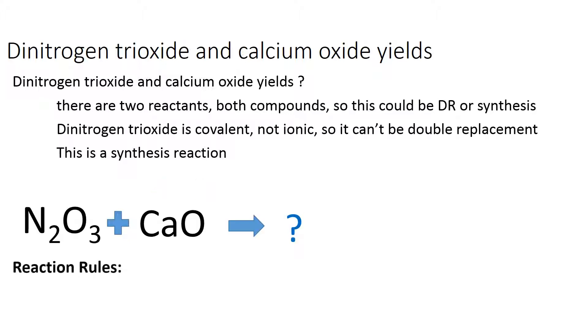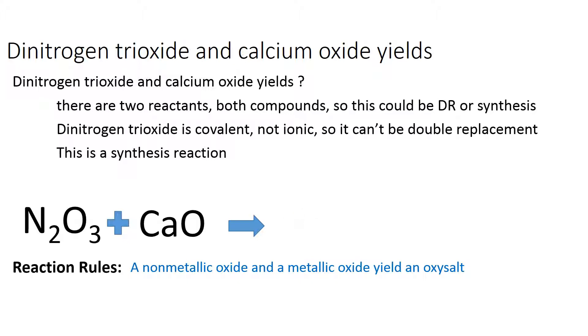So what does this yield? We go to our reaction rules and we see that a non-metallic oxide and a metallic oxide yield an oxy salt. An oxy salt is a combination of a metal and a polyatomic ion.